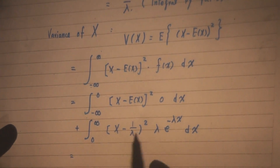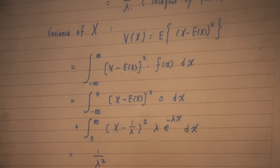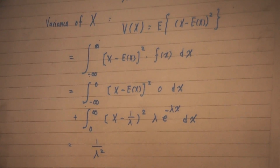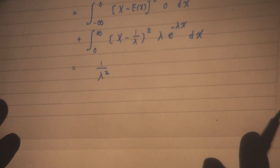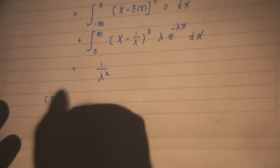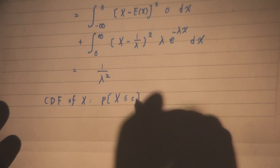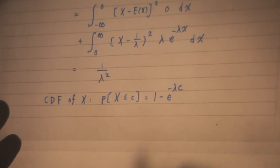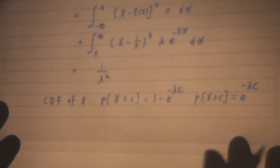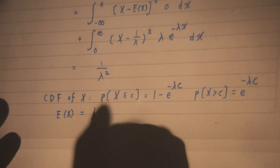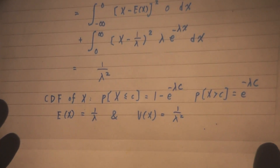If you are patient, you should be able to find the outcome of this integration should be 1 over lambda squared. So the variance of x — if x follows exponential distribution, its variance should be 1 over lambda squared. To quickly summarize what we have learned so far about exponential distribution: the CDF, probability that x less than or equal to c is 1 minus e to the power of minus lambda c, and probability x greater than c is e to the power of minus lambda c. The expected value of x is 1 over lambda, and variance of x is 1 over lambda squared.